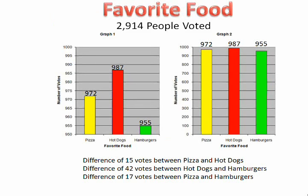Let's take a look at this first example of favorite food. They both show the same information but look very different from each other. One common trick that's used is to manipulate the vertical axis. Look at Graph 1 — the axis starts at 950 and has intervals of 5, making the differences appear larger than they actually are. Graph 1 makes it appear as if hot dogs got almost double the number of votes when it actually got just 15 more votes.